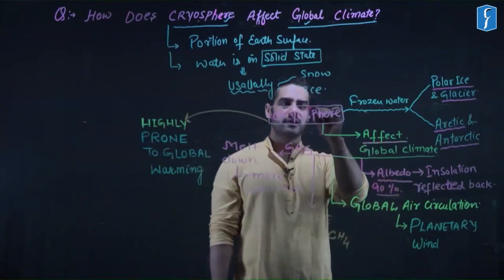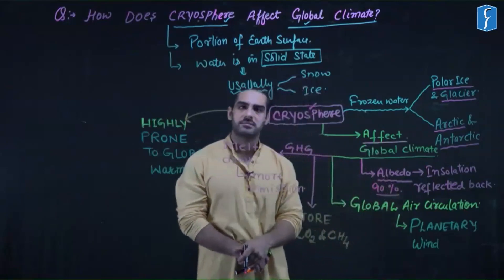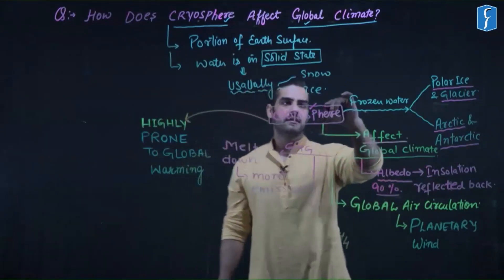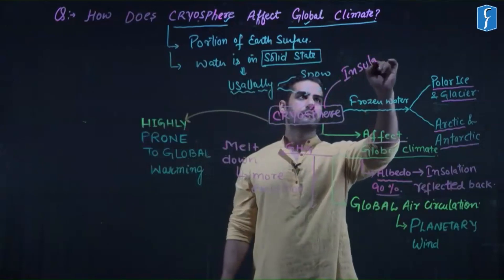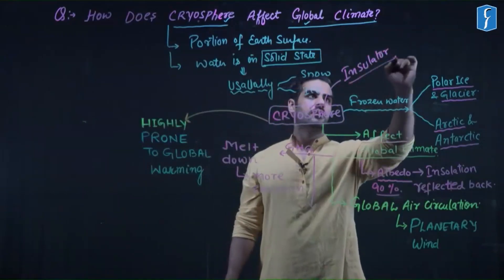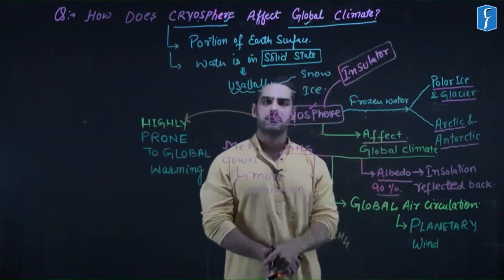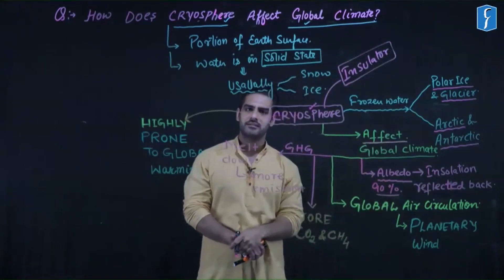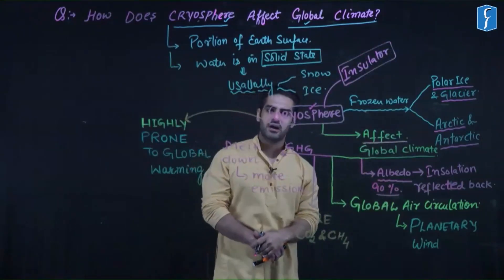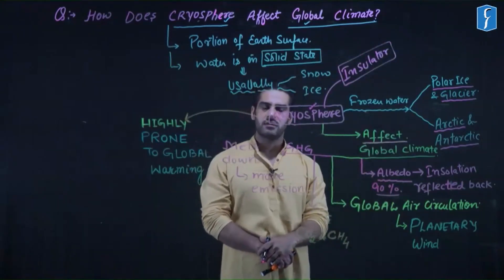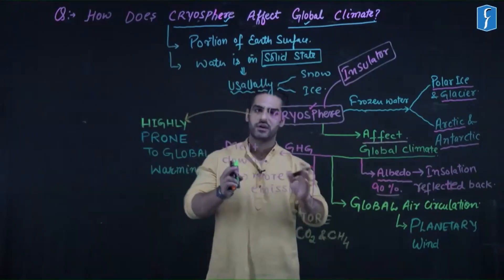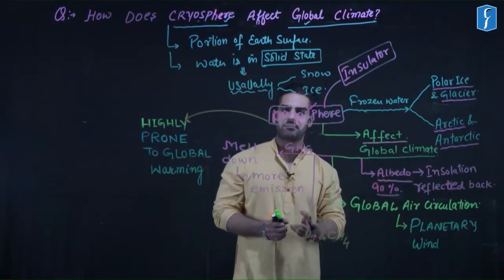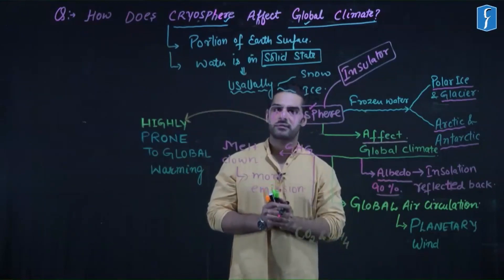Second, the cryosphere also acts as an insulator. It traps a lot of heat of the earth inside and does not allow this heat to enter the atmosphere, thus protecting against the impact of global warming. However, when the cryosphere melts, the heat which is trapped below will be released into the atmosphere — this will be another significant impact.